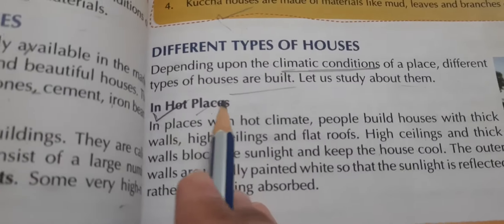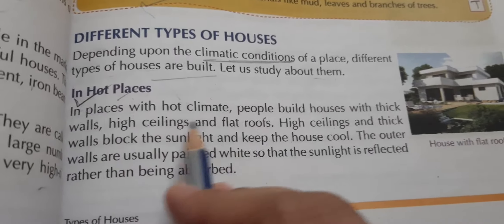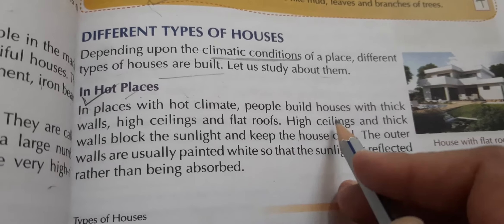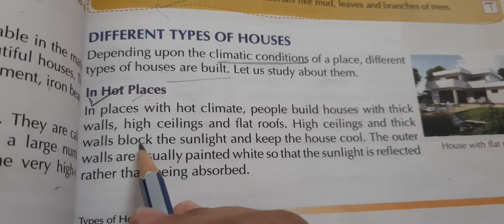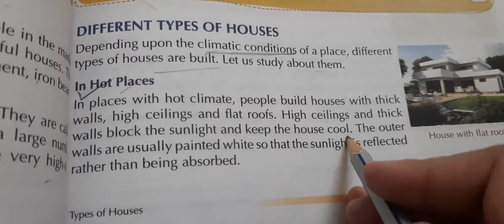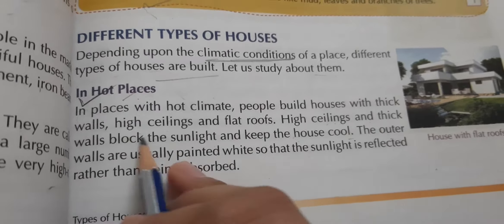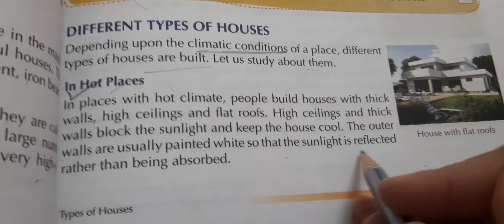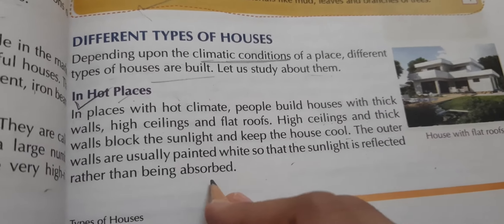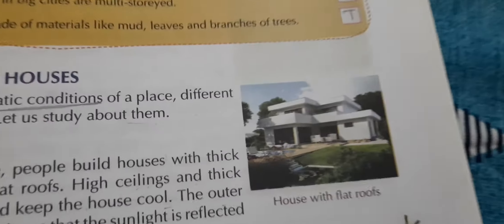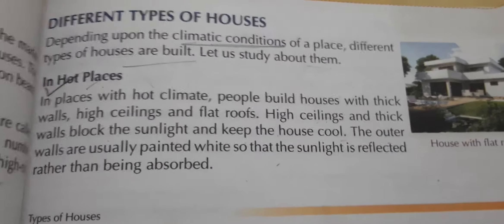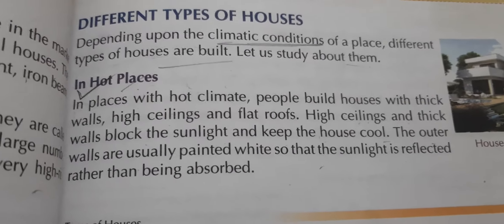In places with hot climate, people build houses with thick walls and high ceilings. Thick walls block the sunlight and keep the house cool. The outer walls are usually painted white so that sunlight is reflected rather than absorbed. This helps keep the interior of the house cool.